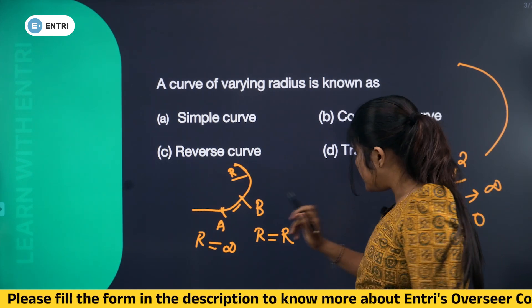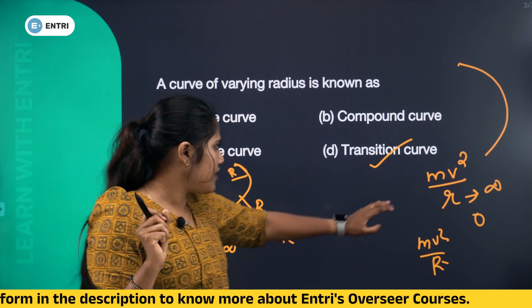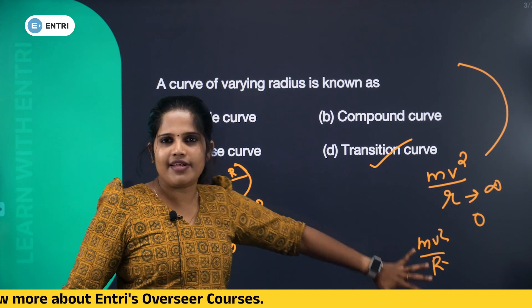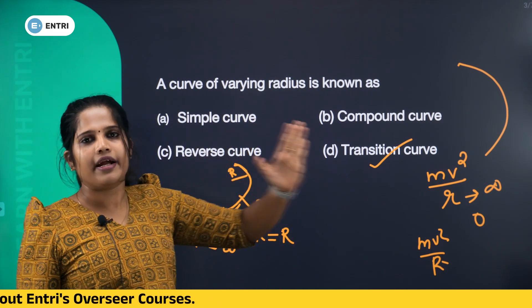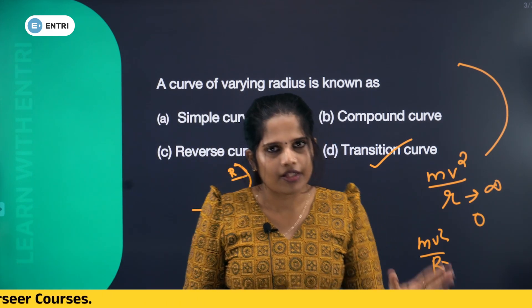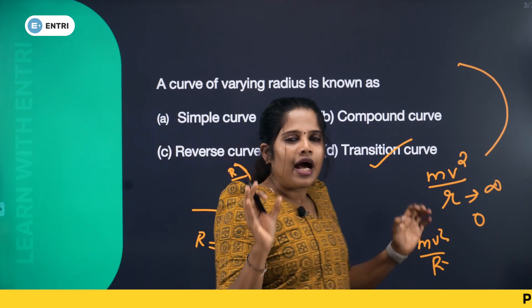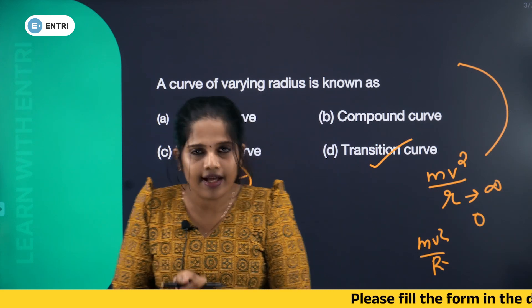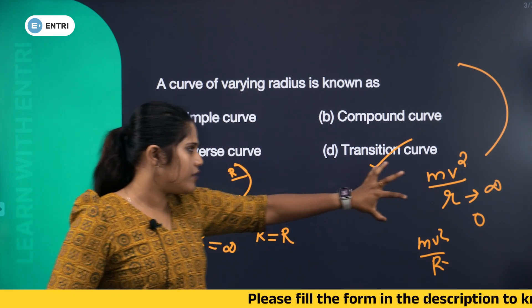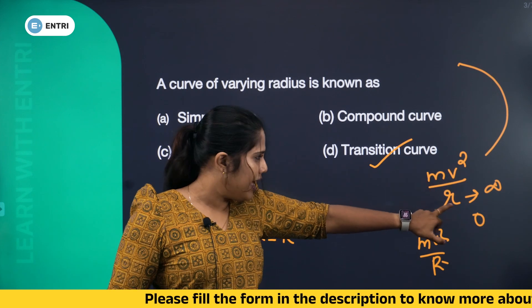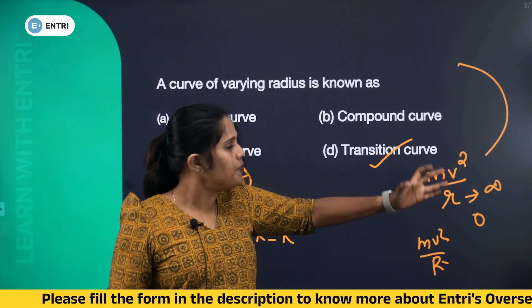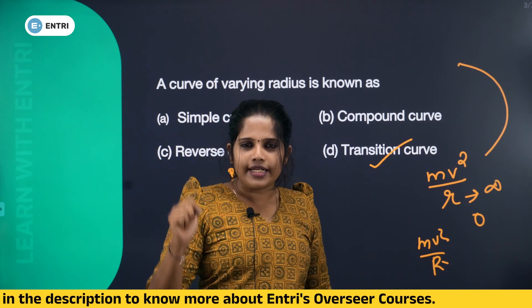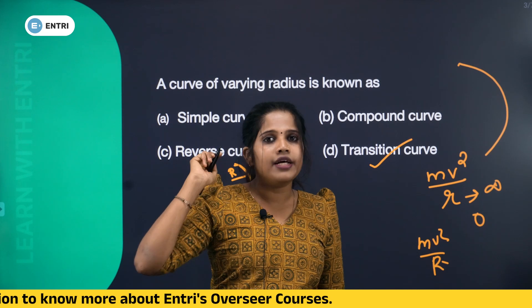When we introduce the transition curve at the starting point, the centrifugal force value is zero (mv²/r with r=infinity). This is how the centrifugal force is gradually introduced. The transition curve has varying radius — from infinity at the start down to R at the end — so the centrifugal force gradually increases from zero to mv²/R.